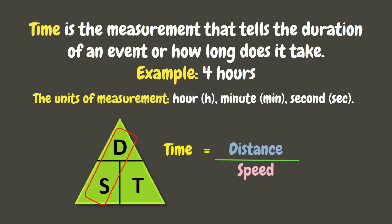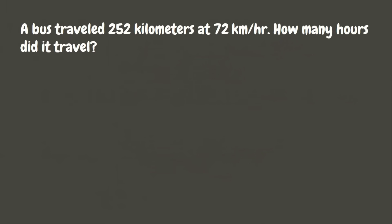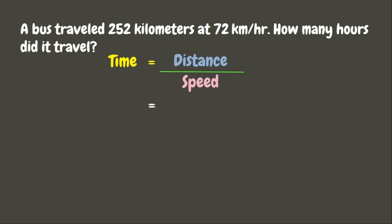Now, let's go and solve our problem. Again, to solve for the time, we are just simply going to divide distance by the speed. Here in our problem, the distance is 252 kilometers and the speed is 72 kilometers per hour. Now, let us solve: 252 divided by 72 is awesome — it's 3.5.